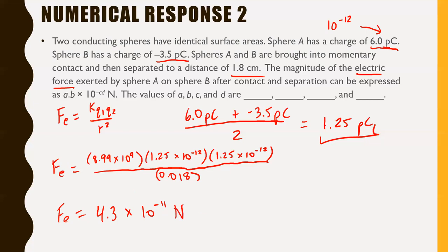Fe is going to equal 4.3 times 10 to the negative 11 newtons. This question is one of those numerical response questions where you list the value of each digit. The answer is in the form A.B times 10 to the negative CD newtons. So A is 4, B is 3, and C and D are both 1 — we record it as 4, 3, 1, 1.